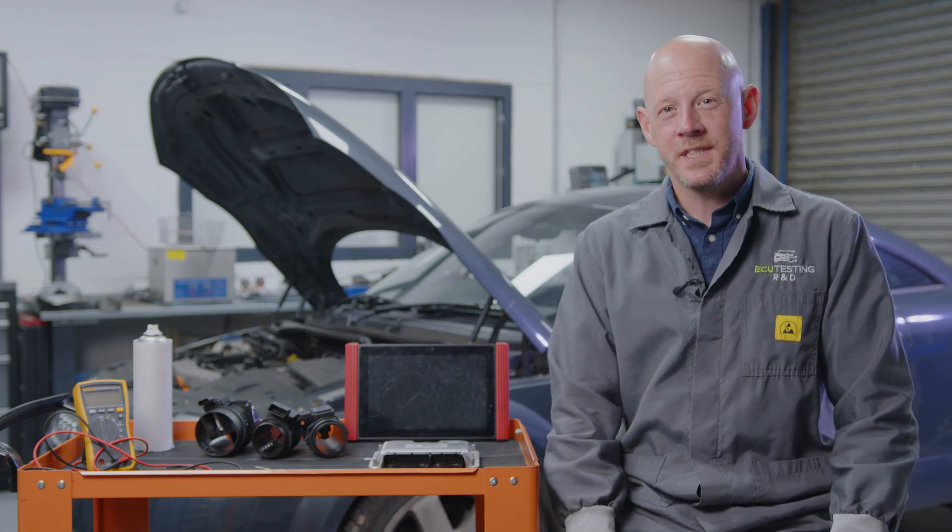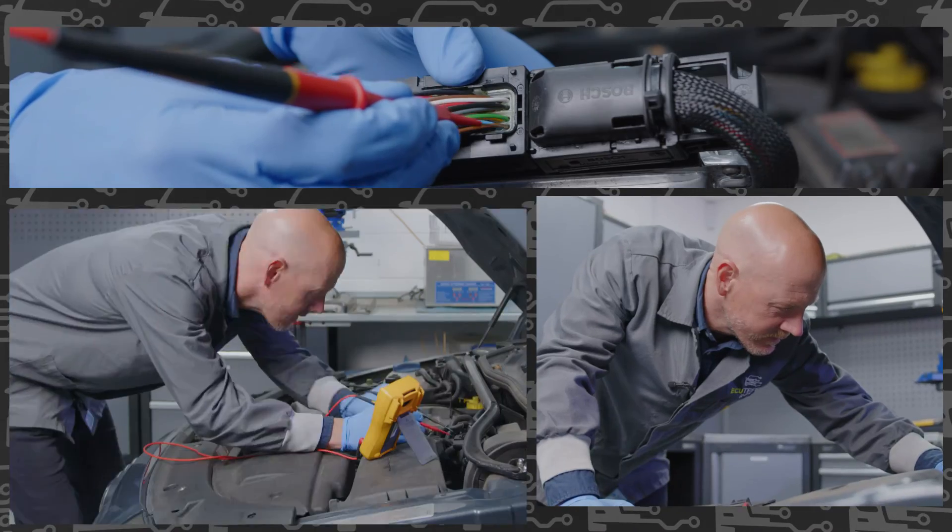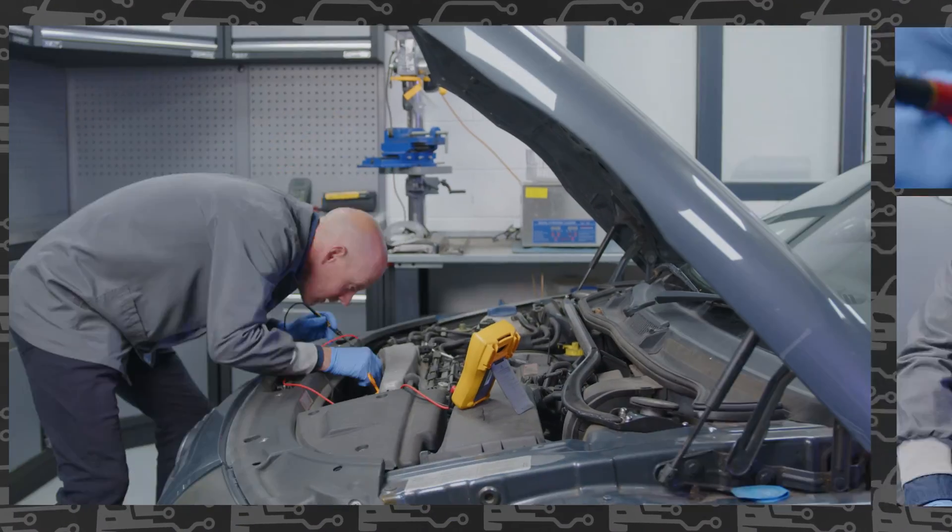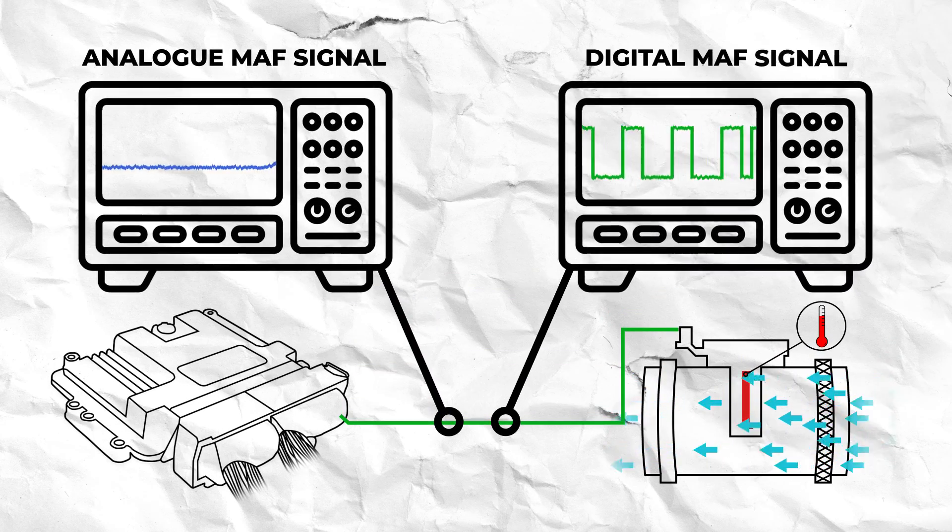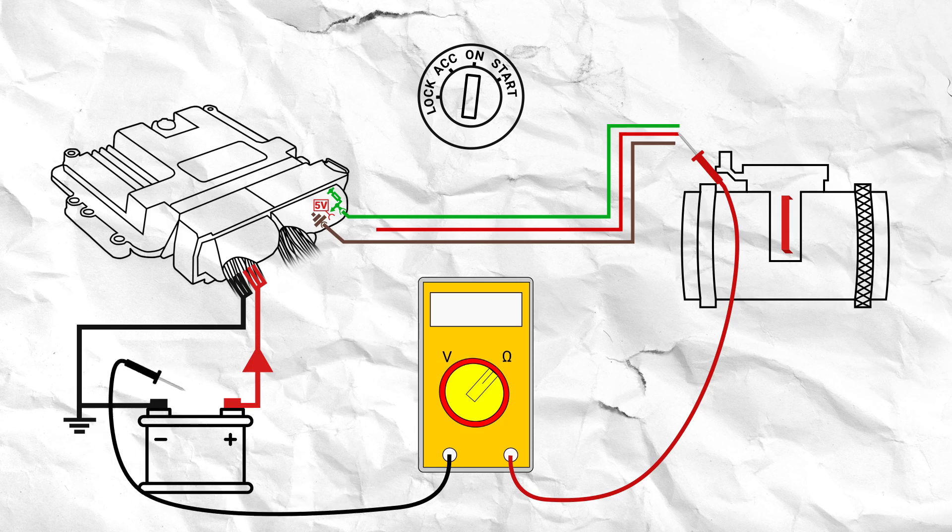If you've got a P0100 to P0104 fault code for a mass airflow sensor circuit malfunction, don't get put off by the prospect of circuit testing. I'm here to take the faff out of testing your MAF because I'm going to run through all the diagnostic procedures required to accurately identify the cause of MAF sensor faults.